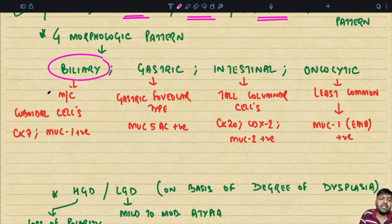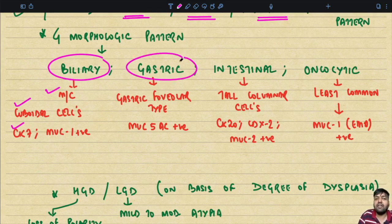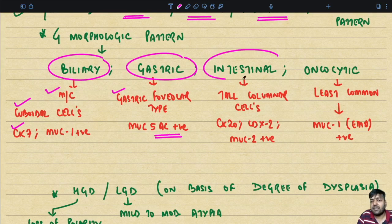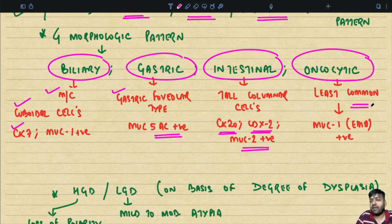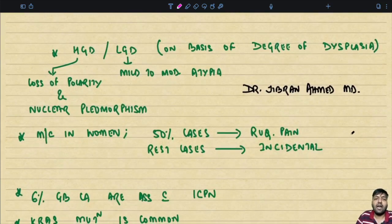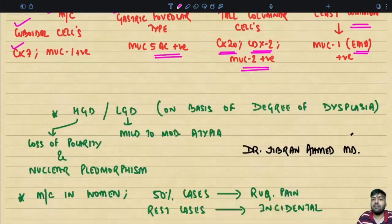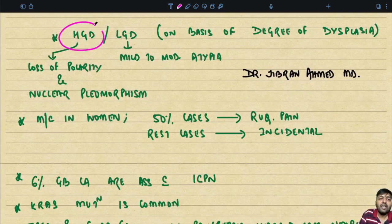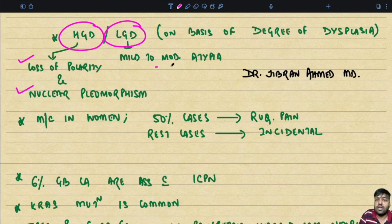There are four important morphological patterns of intracholecystic papillary neoplasm. The most common is the biliary type, lined by cuboidal cells, CK7 and MUC1 positive. Then the gastric variety lined by gastric foveolar-type cells, MUC5AC positive. The intestinal variety is lined by tall columnar cells with diffuse strong positivity for CDX2 and CK20, and is MUC2 positive. The oncocytic variety is the least common, which is MUC1/EMA positive. Based on degree of dysplasia, they are defined as high-grade — showing loss of polarity with nuclear pleomorphism — or low-grade, showing only mild to moderate atypia.